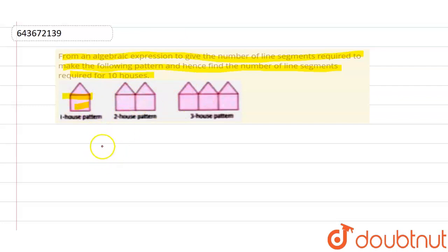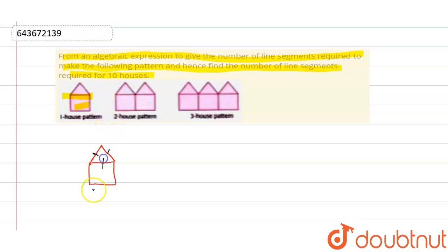First of all we will look at the first house. The first house is in the form of a triangle, in the shape of a hut. The total number of line segments we get is: 1, 2, 3, 4, 5, 6. There are a total of 6 line segments.